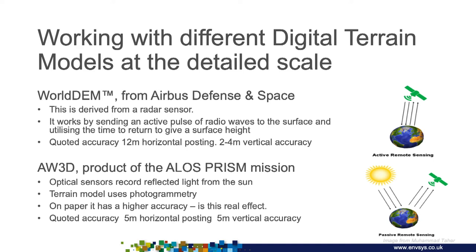Two digital terrain models from satellite imagery worth noting are the World DEM from Airbus Defence and Space, and the ALOS Prism Mission AW3D. The World DEM has a quoted accuracy of 12-metre horizontal posting with two to four metre vertical accuracy. The ALOS Prism quotes five-metre horizontal posting and five-metre accuracy. It's tempting to think the ALOS Prism will give a better result for SCIMAP. But the World DEM is a radar model — it physically pings and measures height as radar data. The ALOS Prism is photogrammetry, taking photos at different times like old stereo air photo pairs, then stripping the vegetation out.